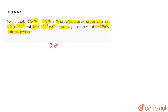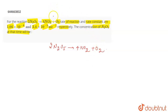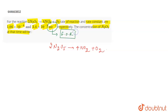You are given the reaction 2N2O5 giving 4NO2 plus O2. Now, you are not given the order of the reaction, but you have to identify it by the units. The rate constant has the unit second inverse, and the unit second inverse means that this is a first order reaction.